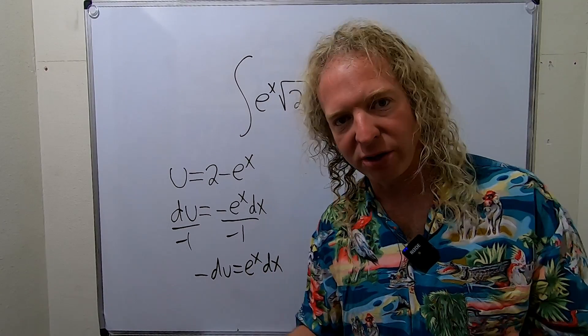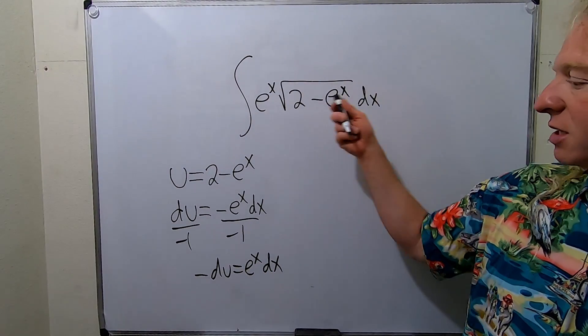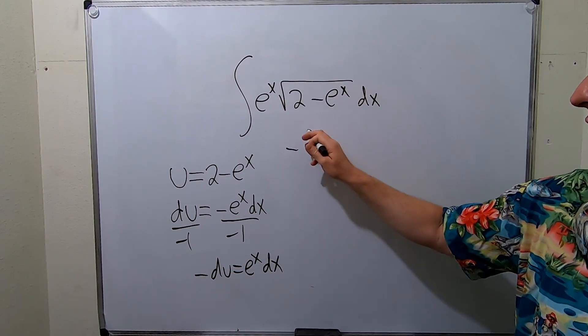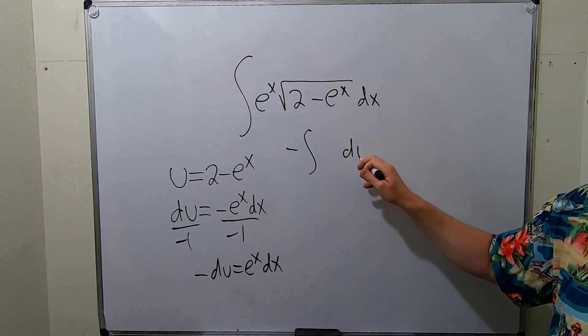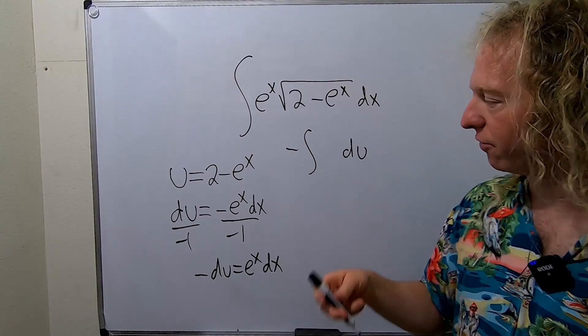Okay so now we're ready to make our u substitution. So e to the x and dx that's going to be negative du. So I'll pull out the negative and we have our du. And then we're just left with the square root of u.